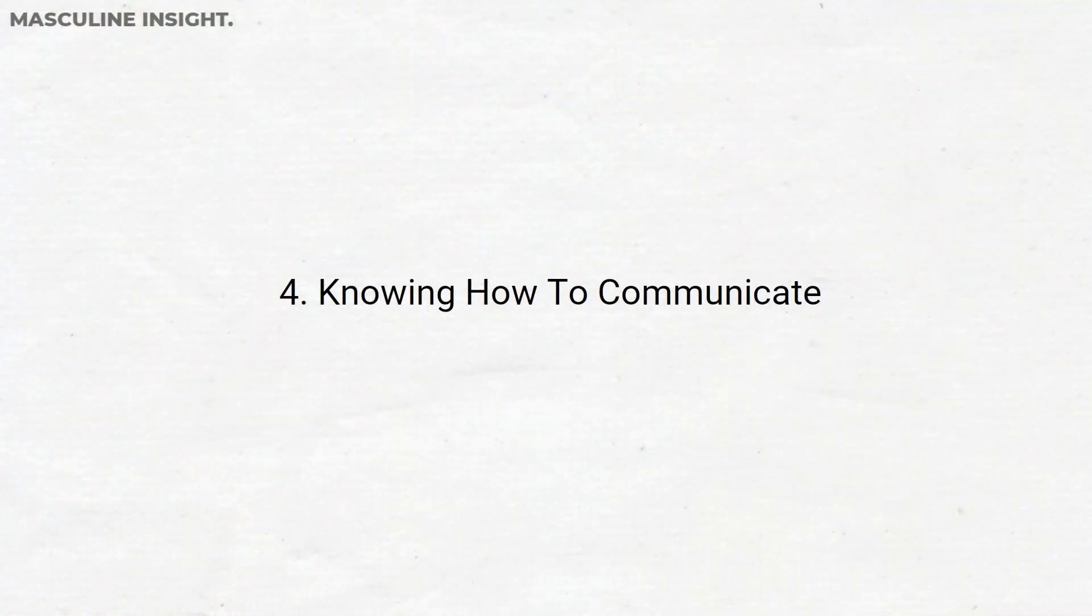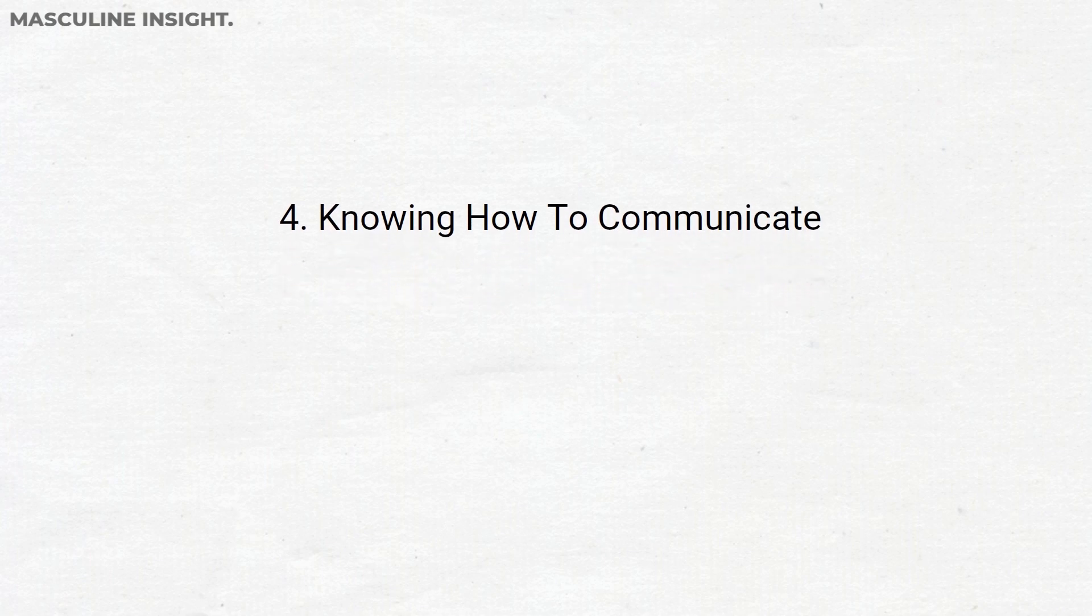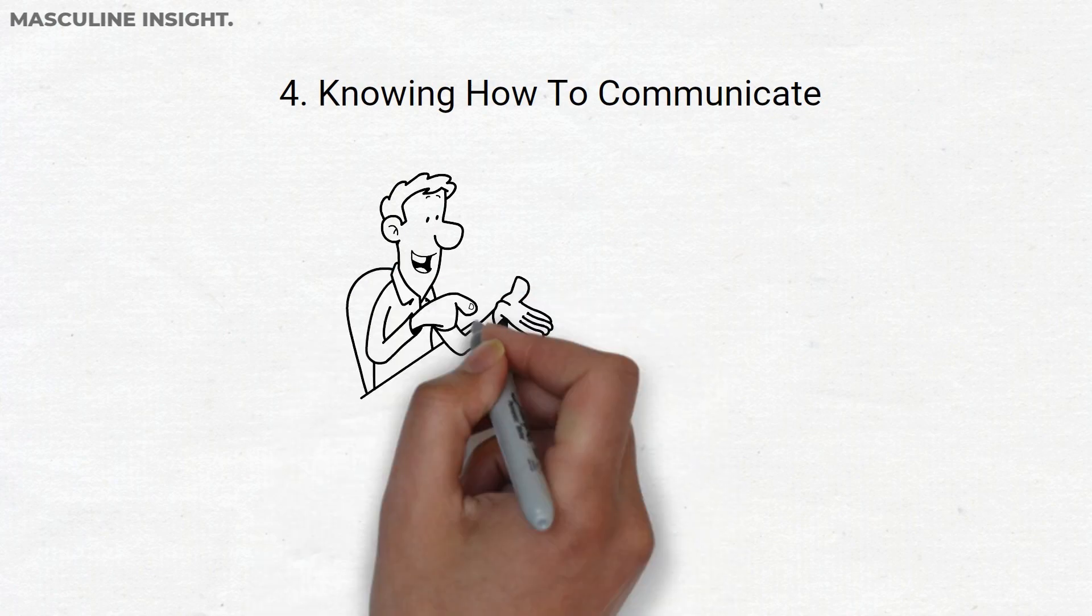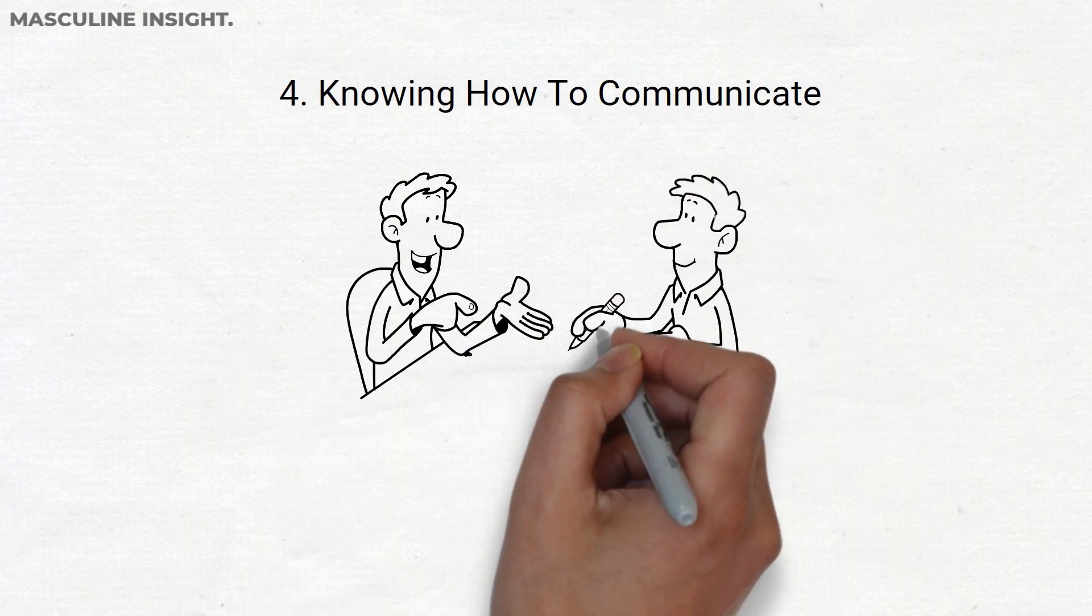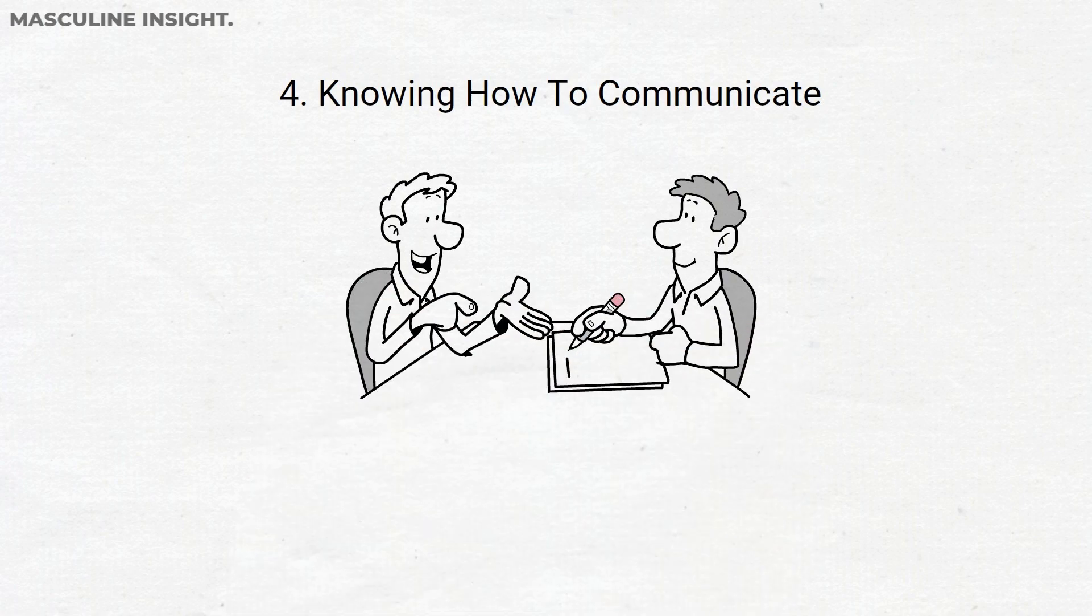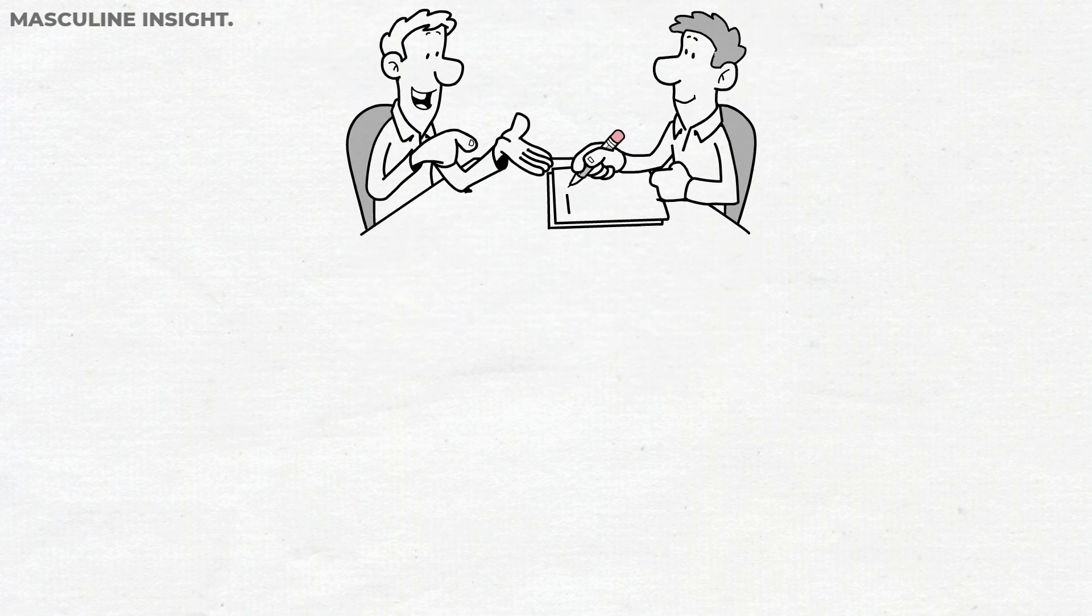4. Knowing how to communicate effectively. The ability to effectively communicate is crucial in any situation. This means not only speaking clearly, but also actively listening and understanding the perspective of others. Good communication skills are essential for building relationships, resolving conflicts, and achieving success in both personal and professional endeavors.